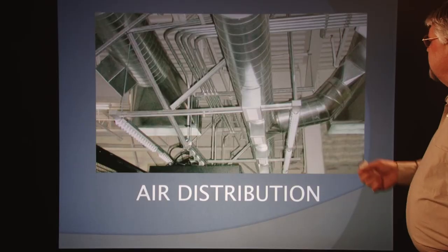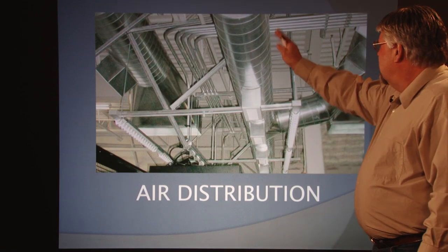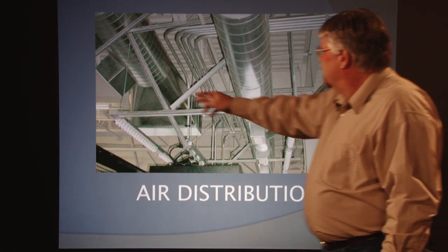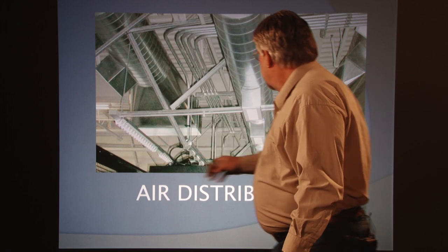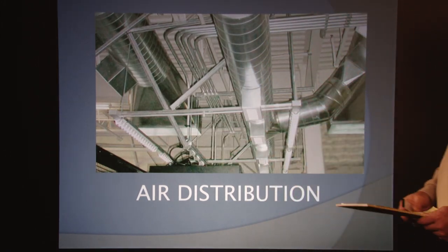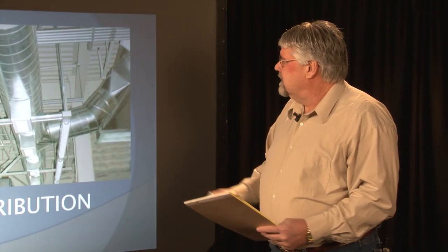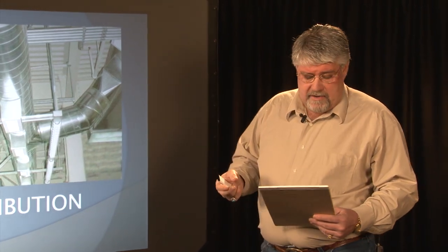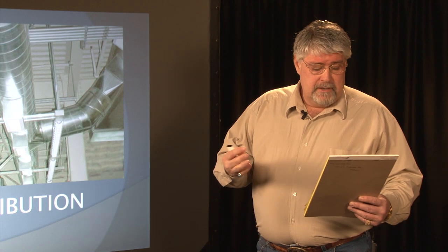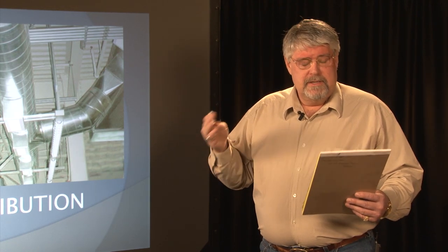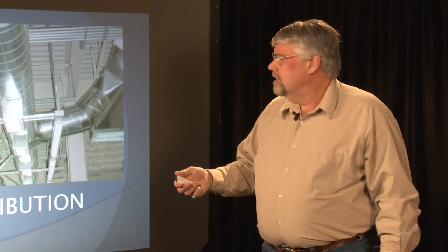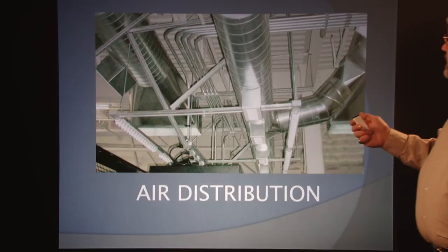Air distribution. You can see we've got a bunch of ductwork going on here. We've got some vents coming off the side. This distribution system is basically a conveyance of air — a system of ducts and plenums, air handling equipment that circulates air within a space. How it's done is by these ducts.